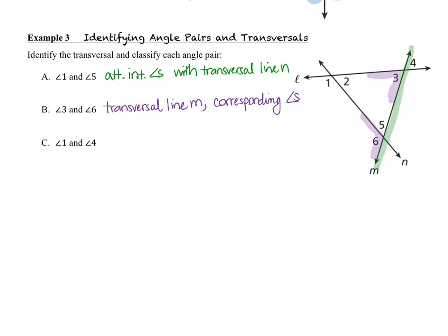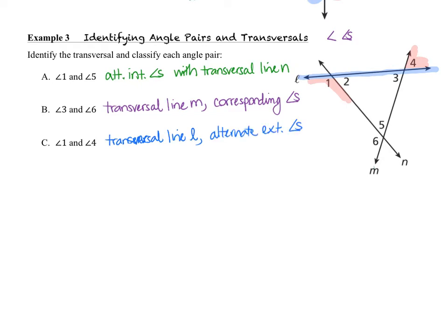You may have noticed we can use abbreviations: for alternate interior, ALT. INT.; for angles, a small angle symbol, and if multiple angles, the angle symbol with an S. For angles one and four, the line used to create both is line L — so L is our transversal. What is the relationship of these two angles? They are alternate exterior angles.